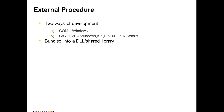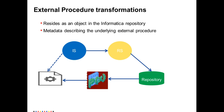The external procedure transformation is created in the Designer and resides as an object in the Informatica repository. This corresponding object contains the metadata describing the underlying external procedure, and using this metadata the Integration Service knows the signature of the external procedure and binds the external procedure to the mapping.